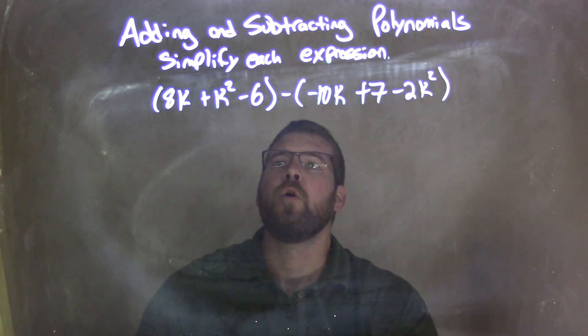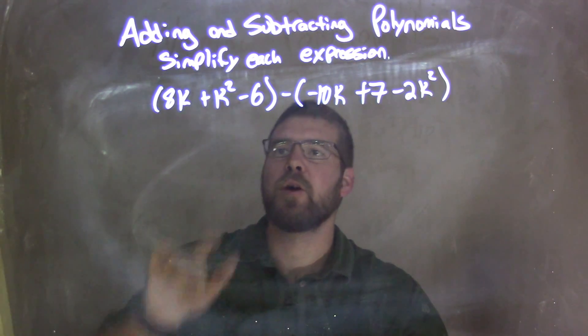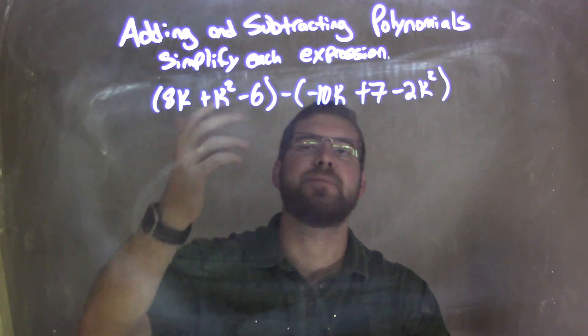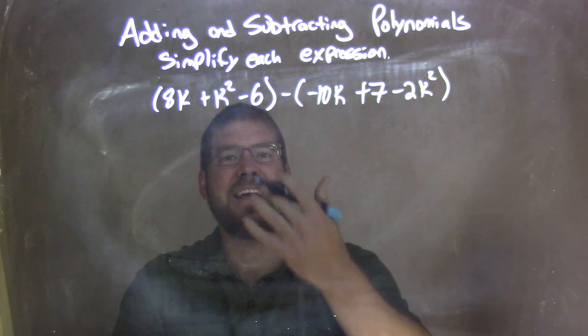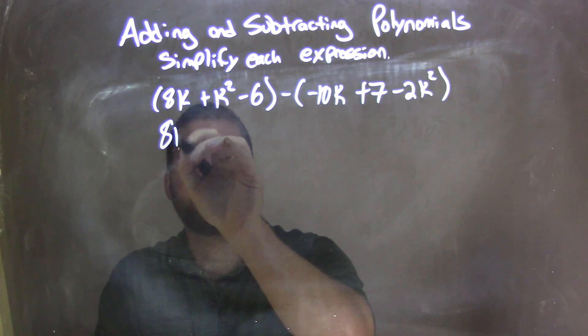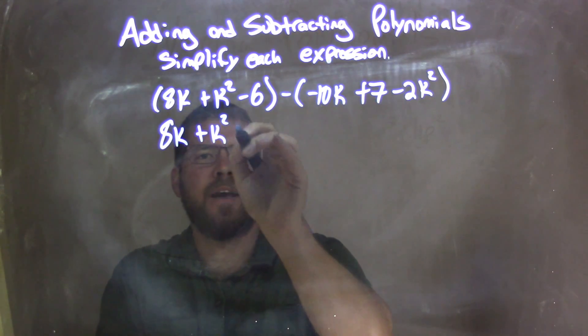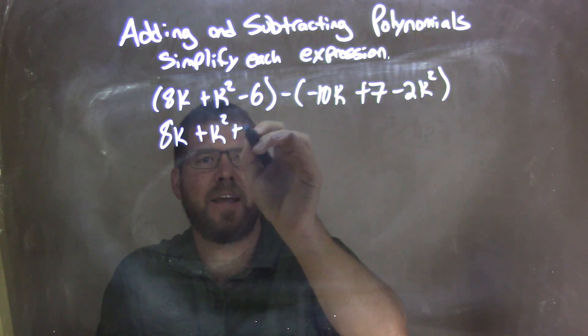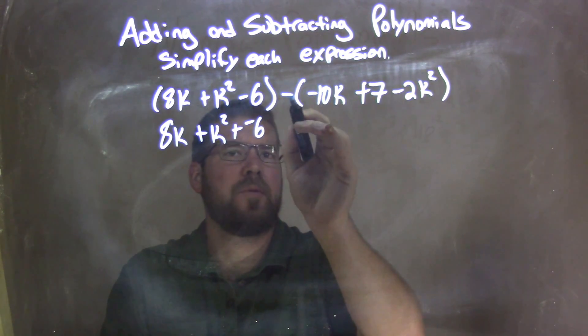Okay, first thing I want to do is look in both parentheses. Are there like terms? No, there's not. So I'll make all my subtractions into adding a negative. I have 8k plus k squared, and minus 6 is adding a negative 6. I'm also going to distribute this minus sign across.